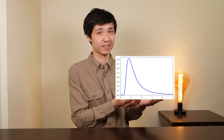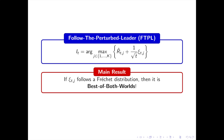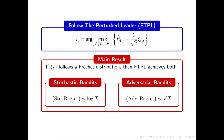A crucial question is: what should the perturbation be? In other words, what perturbation makes FTPL best of both worlds? Previously, researchers conjectured that if the perturbations follow the Fréchet distribution, then FTPL is best of both worlds. Today's paper solves this conjecture. The main result is that if the perturbations follow the Fréchet distribution, then FTPL is a best of both worlds strategy — achieving log T regret in the stochastic bandit setting and √T regret in the adversarial bandit setting.